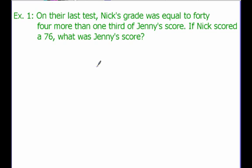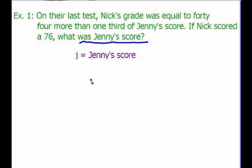What we need to do here first is think, what is our unknown? What don't we know? If we look at the last sentence, it says: if Nick scored a 76, what was Jenny's score? We don't know what Jenny's score was, so our variable — our unknown — is Jenny's score. We're going to use J to represent Jenny's score; it's what we're trying to find out.